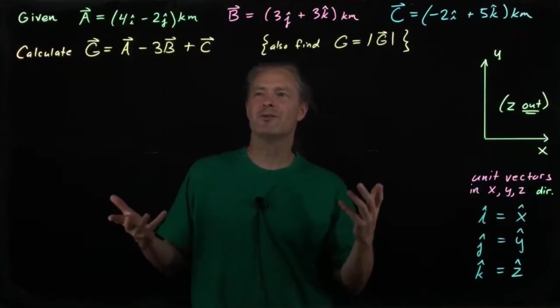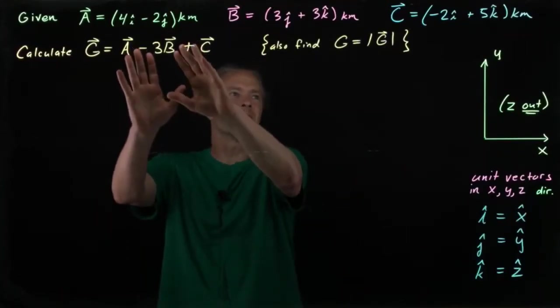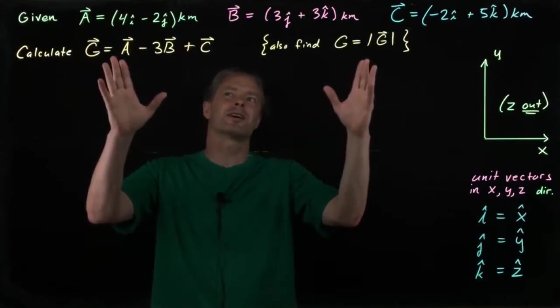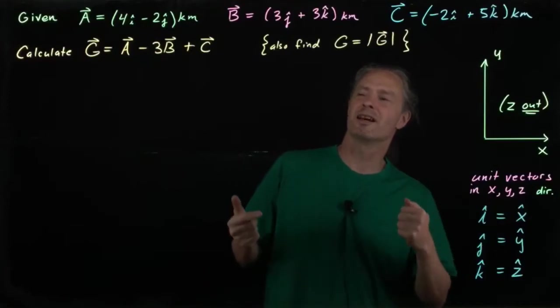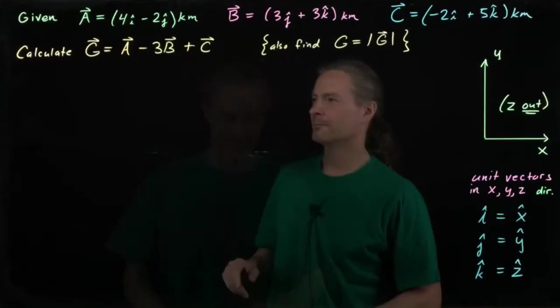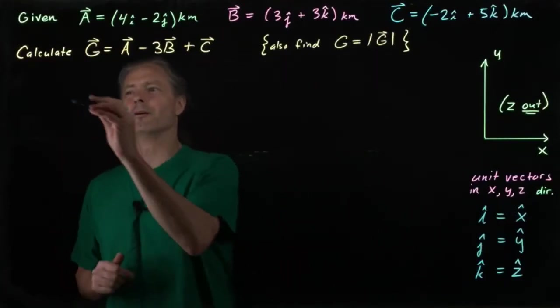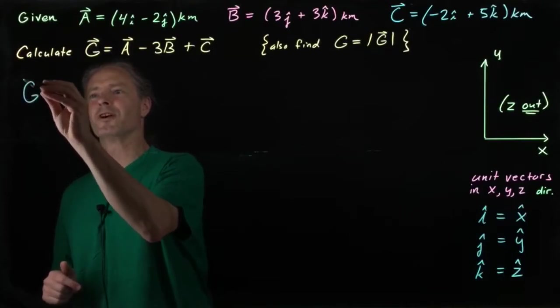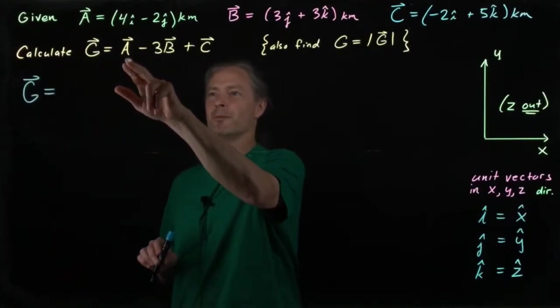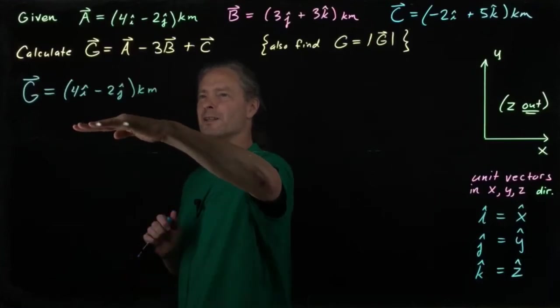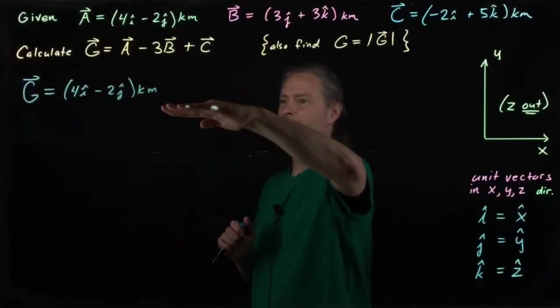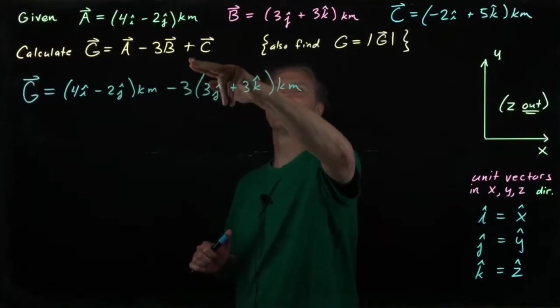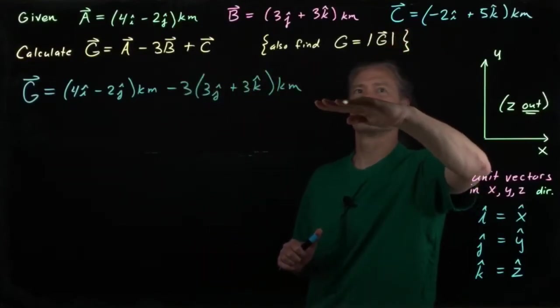All we have to do to do this is basically write out these vectors, combine the x-hat, y-hat, and z-hat terms, or in this case, i-hat, j-hat, and k-hat terms and go from there. Okay, so here we go. G vector is equal to the A vector right here, and then I have minus 3B vector right here, and finally plus C vector right here.